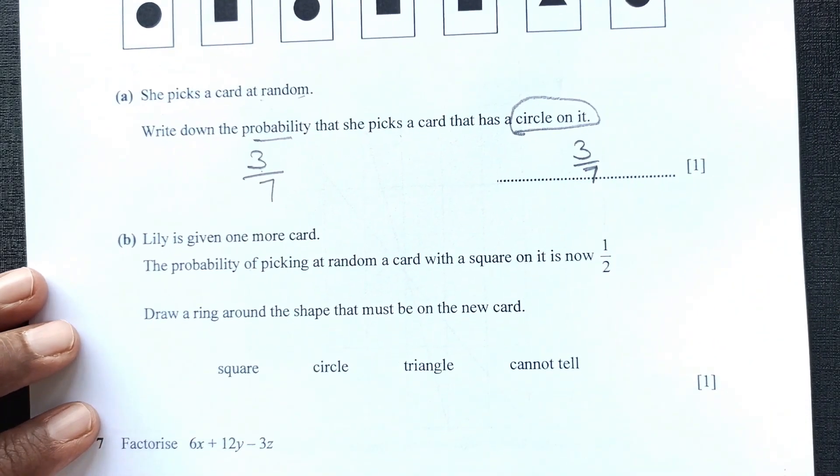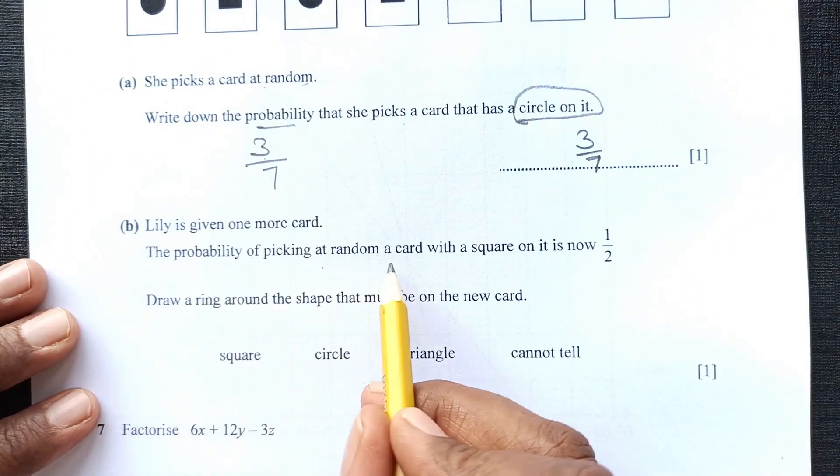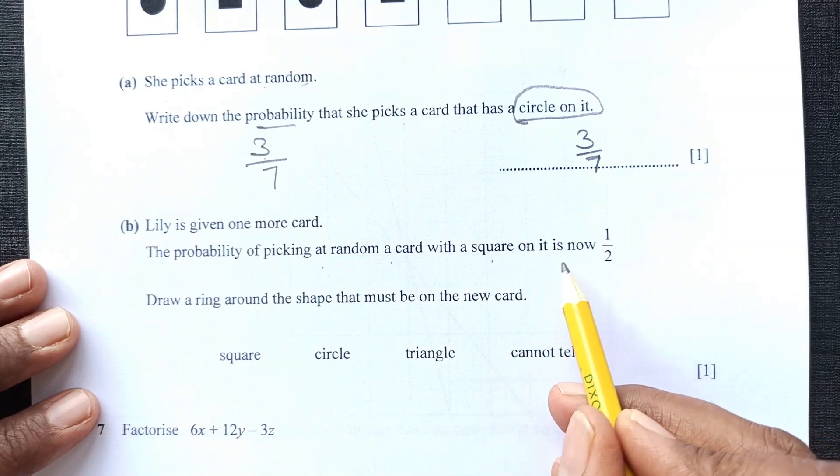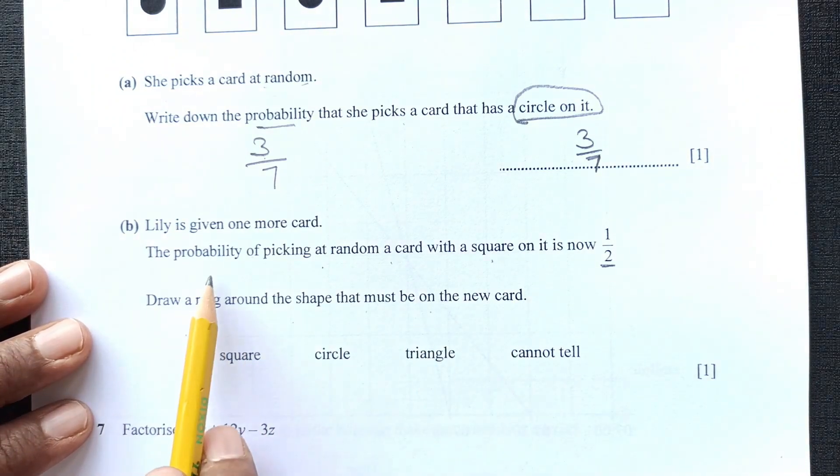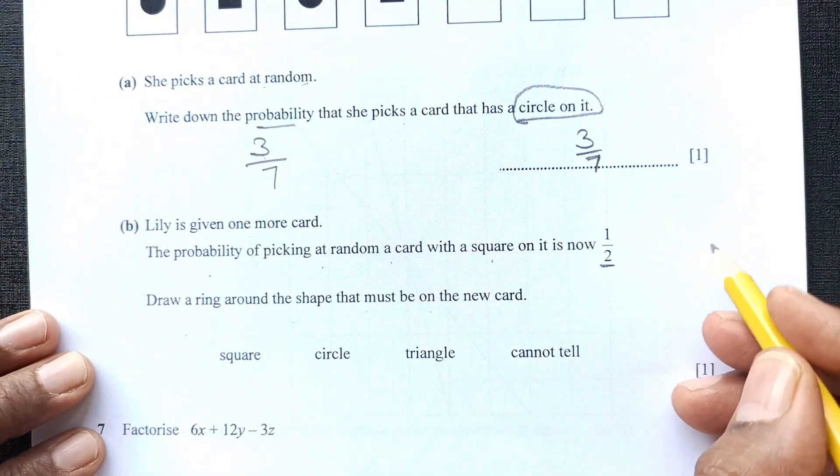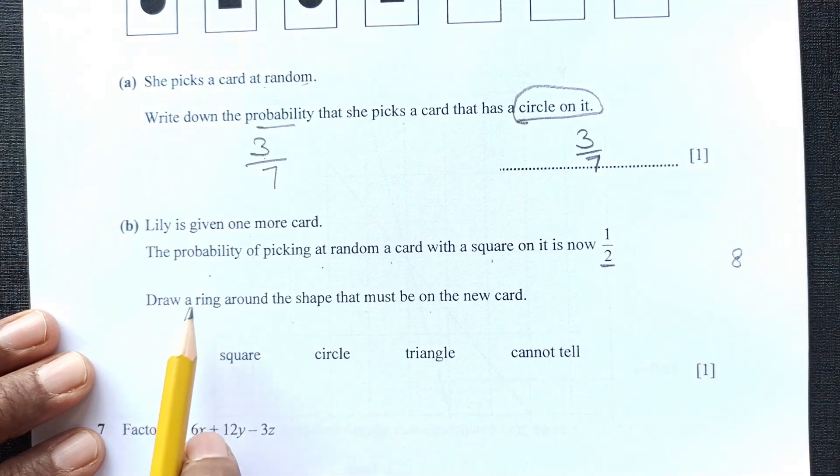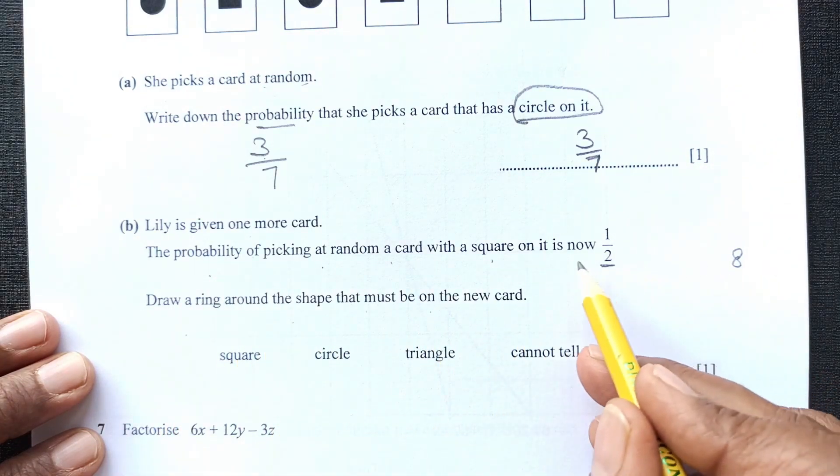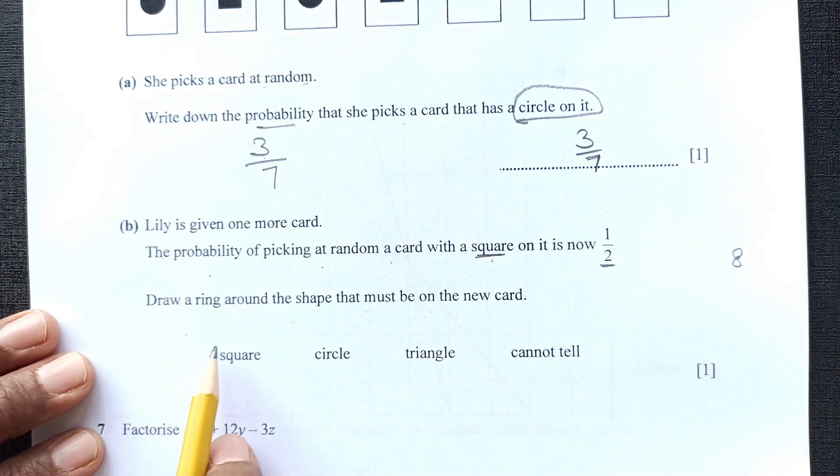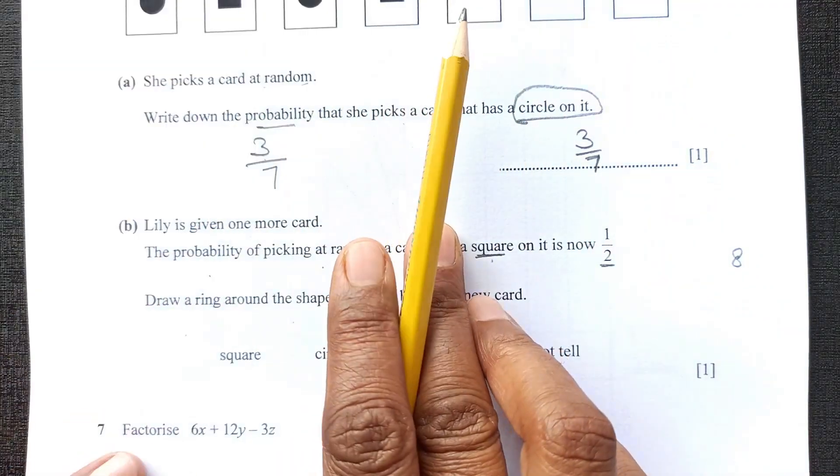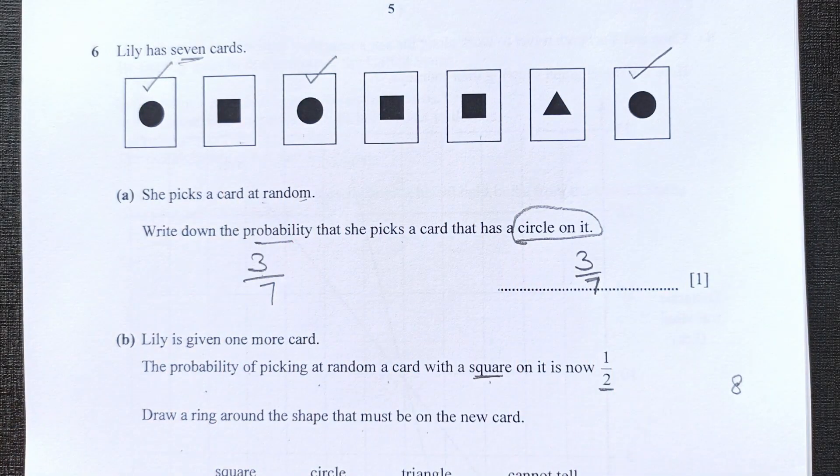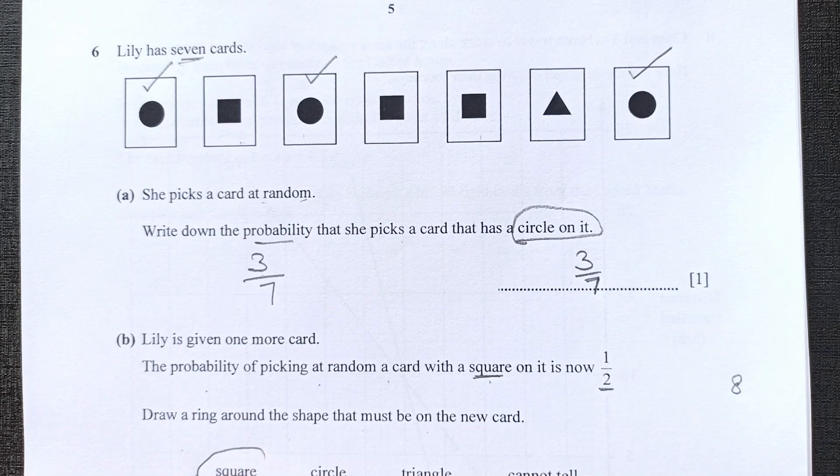Part B. Lily is given one more card. The probability of picking a card with a square on it is now half. Draw a ring around the shape that must be on the new card. Let's go back again. She is given one more card. She has 7 cards, now she has 1 more card. That means there are 8 cards now. The probability of picking that card with a square on it is now half. We need to see which one because there is triangle. We have 1, 2, 3 squares there. We have 3 squares there and then the probability will be most probably it should be a square.